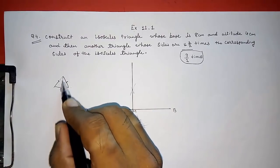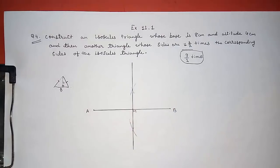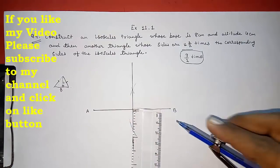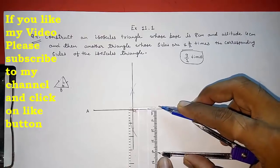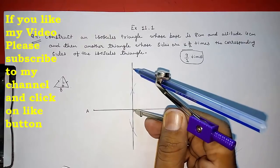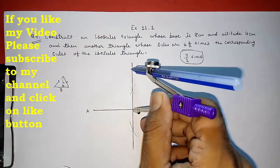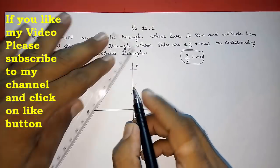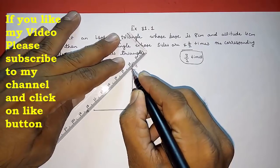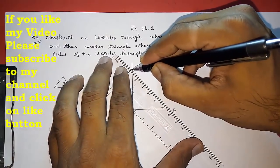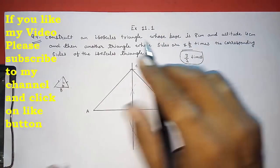This is our perpendicular bisector. And they said the altitude is 4 cm. So from here we have to make arc of 4 cm. I am taking it here. Arc of 4 cm. Now on the upper side, here we will get point C. Now join A to C and B to C. This is our given triangle.